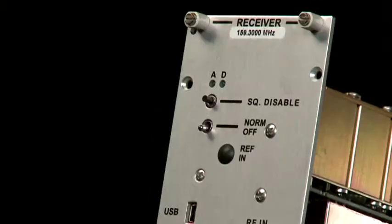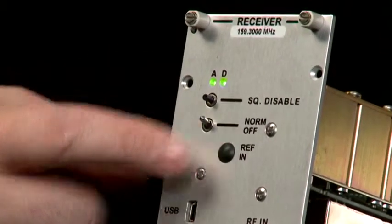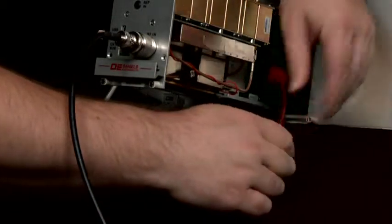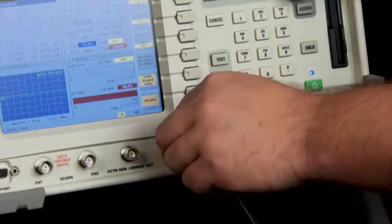Ensure that the front panel switch on the receiver is in the normal position. Connect the signal generator output to the RF input of the receiver. Connect the audio output from the receiver to the audio input port of the SINAD meter.